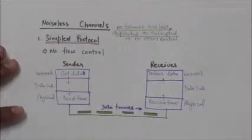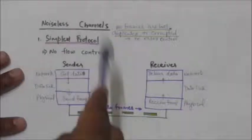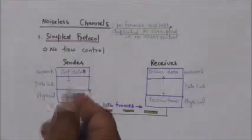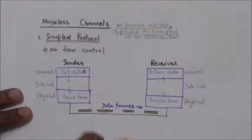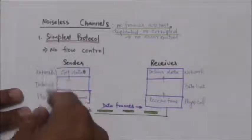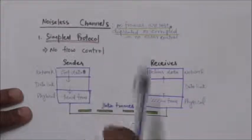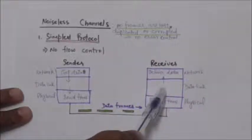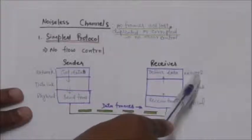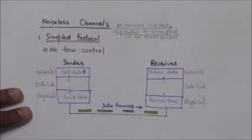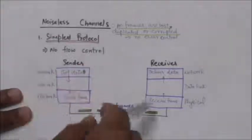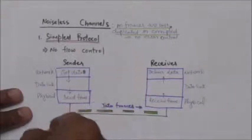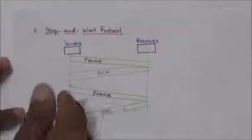The Simplest Protocol is a unidirectional protocol in which data frames travel only in one direction, from sender to receiver. There is no need for flow control in this protocol because it is assumed that the receiver can handle any frame it receives with negligible processing time. When the data link layer of the receiver gives the data packet to its network layer, the network layer also accepts the packet immediately. So the receiver can never be overwhelmed with incoming frames.